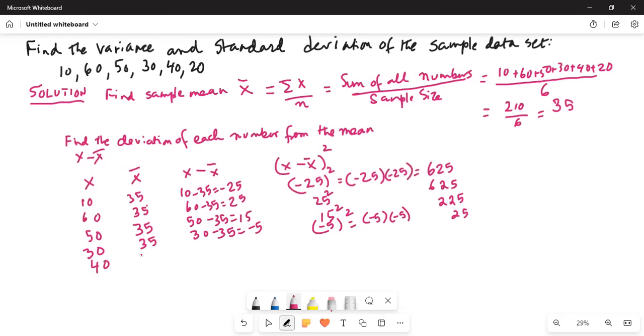The next number is 40, mean is 35. 40 minus 35 is positive 5, and 5 squared is 25. The last number is 20. 20 minus 35 is minus 15, and minus 15 squared is positive 225.